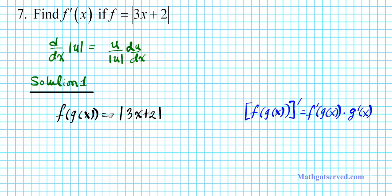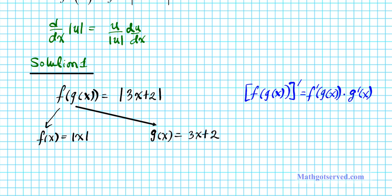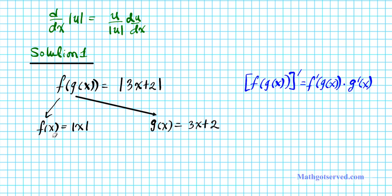We're going to apply the chain rule here. Let's decompose this composite function. The outer function is f of x equals the absolute value of x, and the inner function is g of x equals 3x plus 2. The derivative f prime of x is x over the absolute value of x, and the derivative g prime of x is 3.